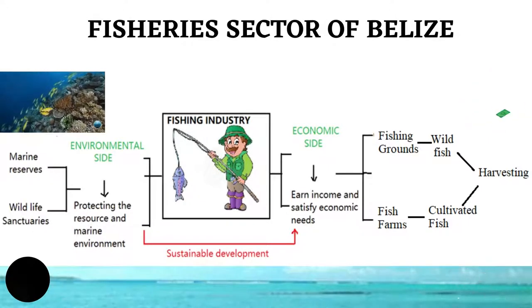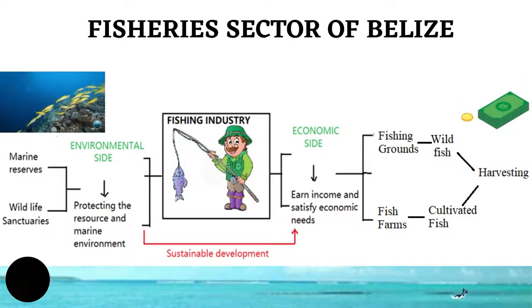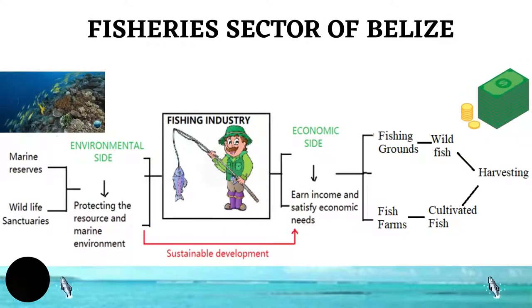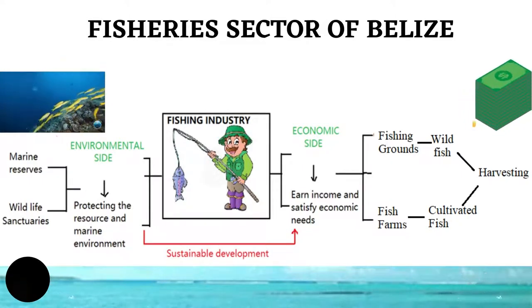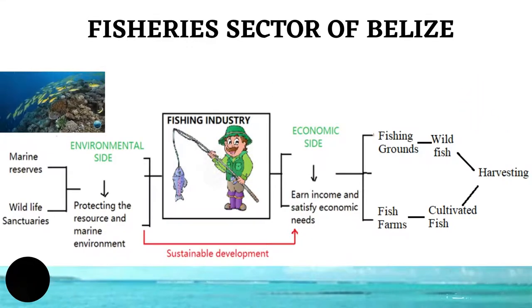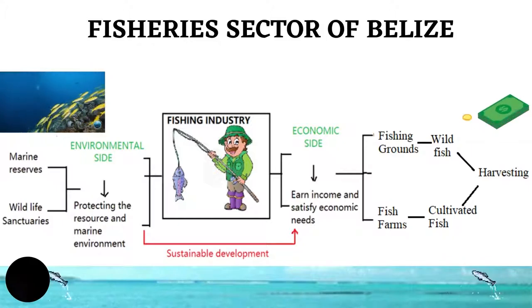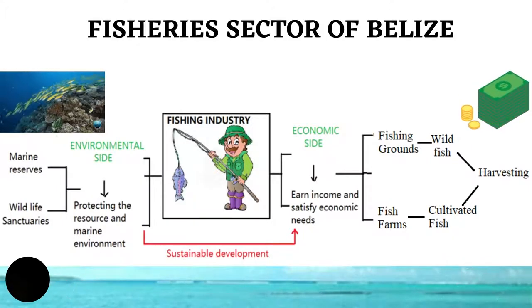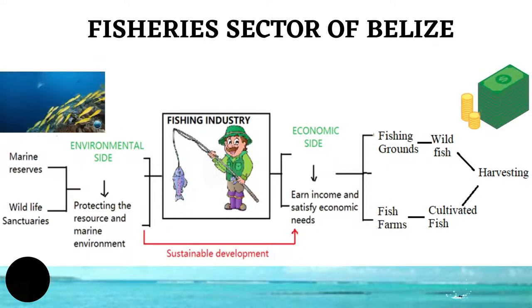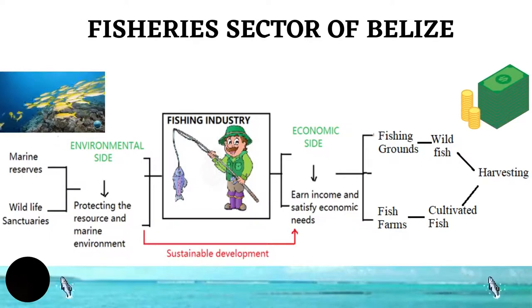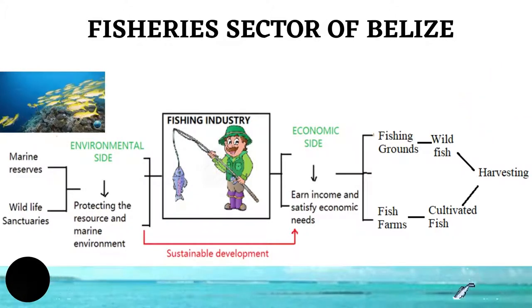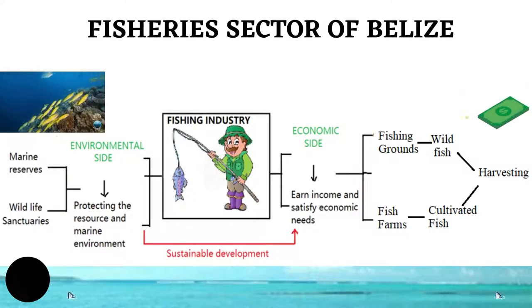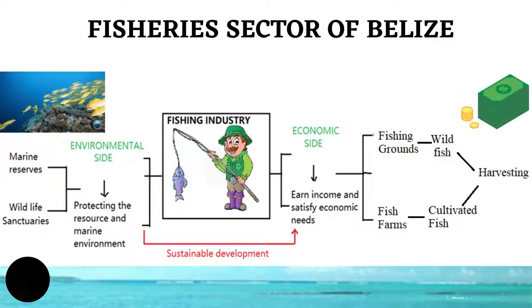All economic activities are related in one way or another to the environment. Primary industries such as fishing, which involves extraction and harvesting of raw materials, are directly related to the environment. If the resources being extracted are not carefully managed, then the industry itself will have an uncertain future. It is for this reason that Belize's fisheries have two sides to it: the environmental side where the resource is managed, and the economic side where the resource is extracted and sold to make a profit. The balance of the two is necessary for sustainable development to be achieved.